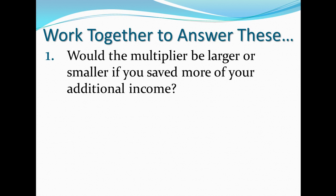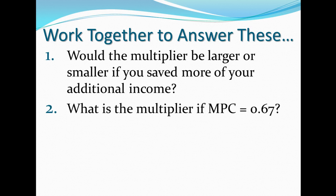Would the multiplier be larger or smaller if you saved more of your income? The less you save, the larger the multiplier is. What is the multiplier if MPC equals 0.67? You do 1 over 1 minus 0.67, which gives you 1 over 0.33, and that equals 3.